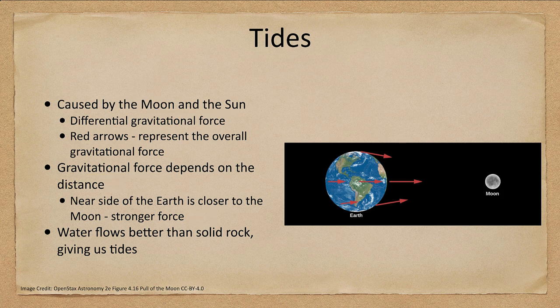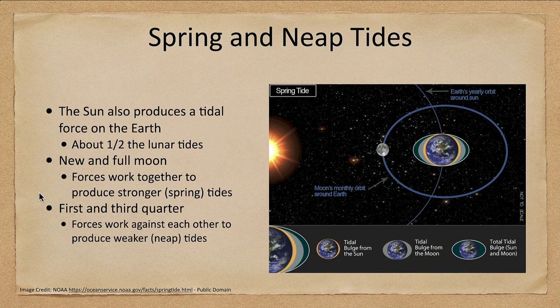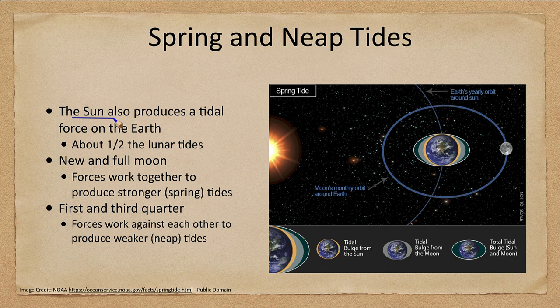Let's look at an animation showing two different types of tides. The sun also produces a tidal force, but it's about half the strength of the lunar tides, so it's not nearly as strong.